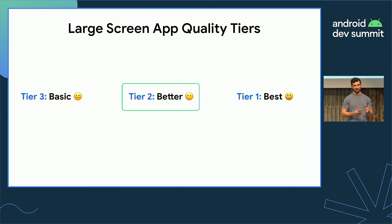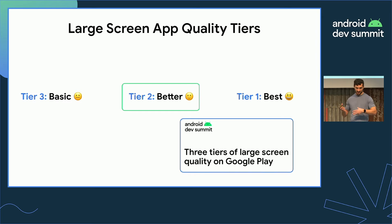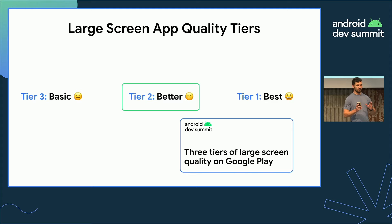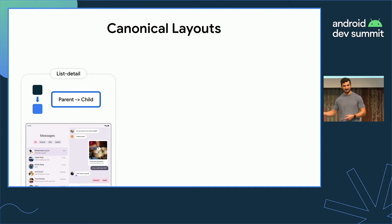Why should you care about this talk? We briefly introduced large screen quality tiers, and we mentioned that the best way to achieve tier two — and some of the biggest issues we see with apps gaining tier two — is related to UI and layout. The learnings from this talk will help you achieve that piece of the large screen quality guidelines for tier two. There's more detail in the three tiers of large screen quality on Google Play talk if you want to learn more specifically about the tiers, but now let's get into the canonical layouts design philosophy.